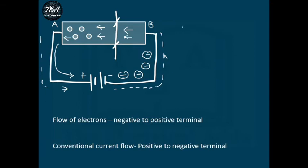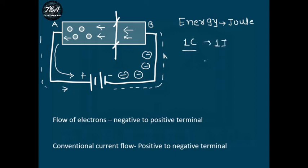To move charge, we require energy, which is measured in joules. Assume we have 1 coulomb of charge, and to move this charge from the negative to the positive terminal we require 1 joule of energy. If 1 joule of energy is required to move 1 coulomb of charge from the negative to the positive terminal, then the potential difference between the positive and negative terminals is 1 volt.